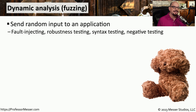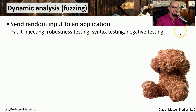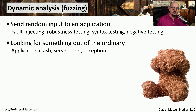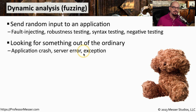Application developers can also perform dynamic analysis, sometimes referred to as fuzzing. Fuzzing is designed to take random input and put it into an application to see what the results might be — you'll sometimes hear this referred to as fault injecting, robustness testing, or a number of other terms. This dynamic analysis is looking for the application to respond in an unexpected way, such as crashing the application, the server creating an error, or an exception message appearing on screen. All of these help gather details about where additional input verification may be needed in the code.